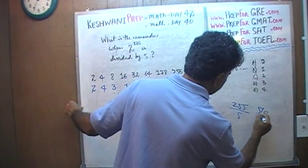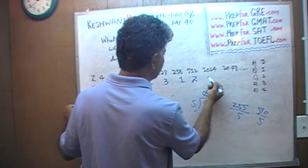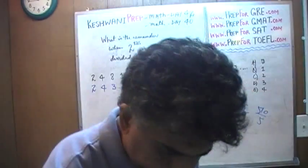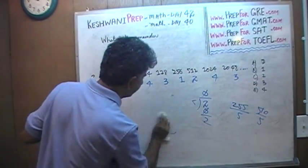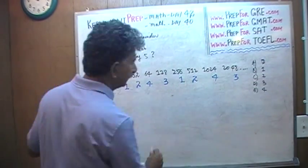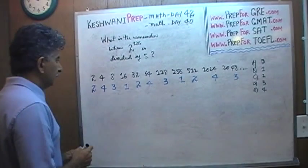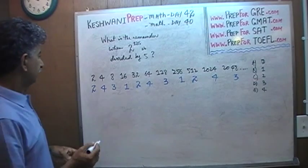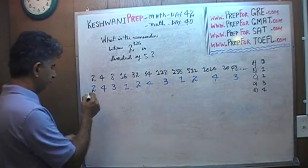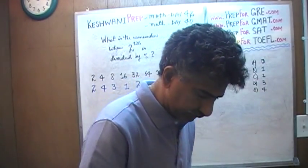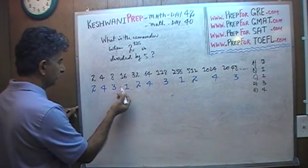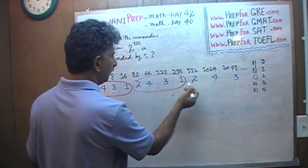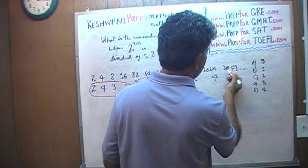510 goes nicely into 5; 512 has a remainder of 2, then 4, then 3. So here is the pattern — let me use a red color marker so we can see it clearly: 2, 4, 3, 1 — then 2, 4, 3, 1 — then 2, 4, 3, 1 again.